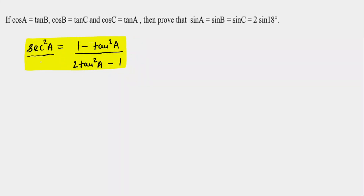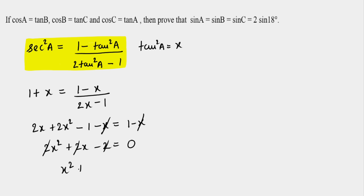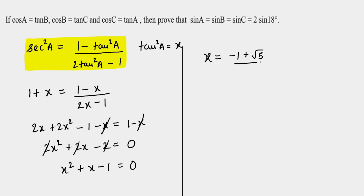Let x = tan²A. Opening sec²A as 1 + tan²A = 1 + x, we get 1 + x = (1 - x) / (2x - 1). Cross-multiplying: 2x + 2x² - 1 - x = 1 - x. Simplifying, the x terms cancel and we get 2x² + 2x - 2 = 0, which reduces to x² + x - 1 = 0. The solutions are x = (-1 + √5)/2 or x = (-1 - √5)/2.